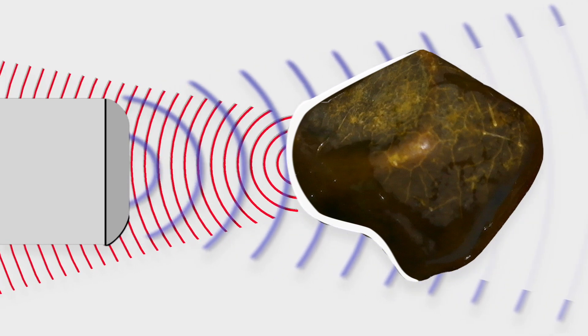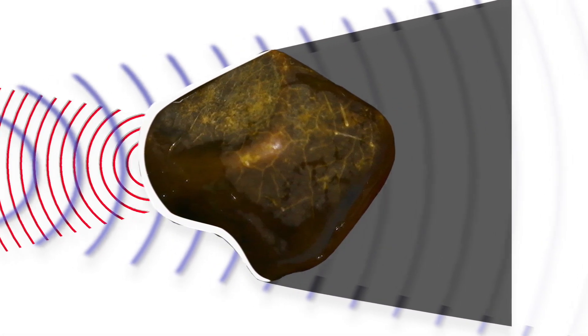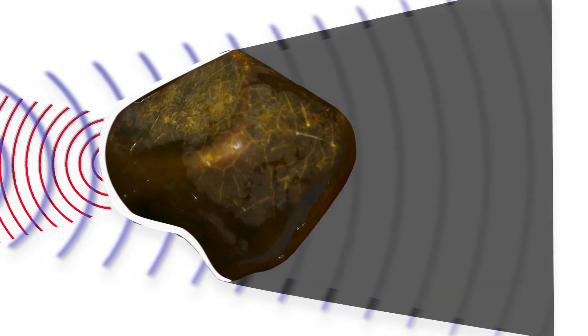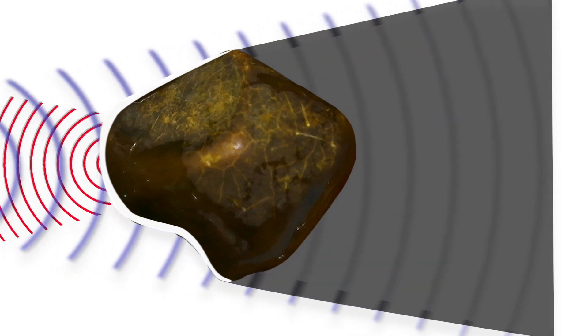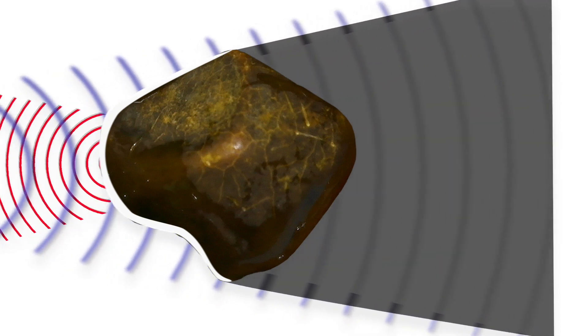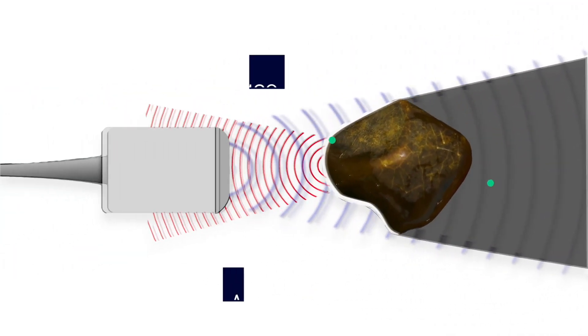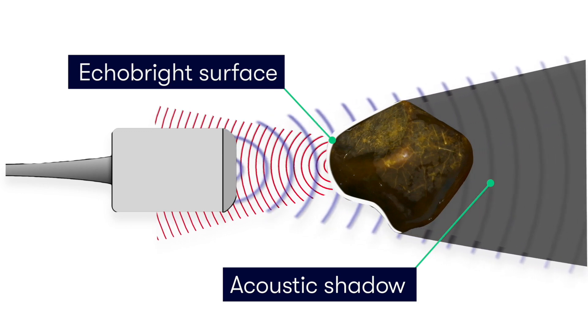The other thing to look for is because all of the waves are reflected back to the transducers and none pass through the stone, this creates a very dark area beyond the gallstone. We call this area the acoustic shadow. So if you look for these two features, an echo bright surface and an acoustic shadow, then you should be able to spot a gallstone.